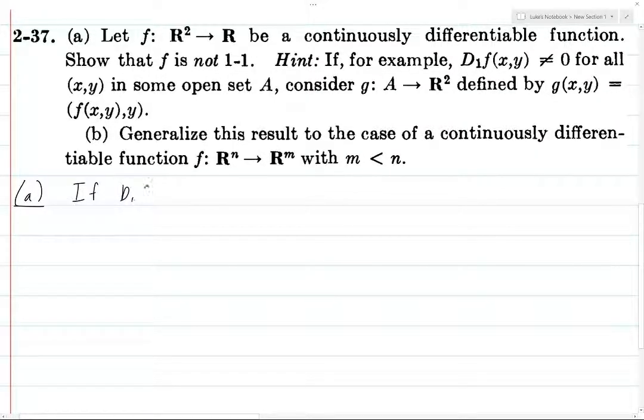If d₁f of (x,y), or rather if d₁f is equal to 0 for all points in R², i.e. if d₁f(x,y) equals 0 for all x and y, and of course here 0 I don't mean the number 0 but the 0 linear operator, linear function. So if this is the case, then f is not one-to-one.